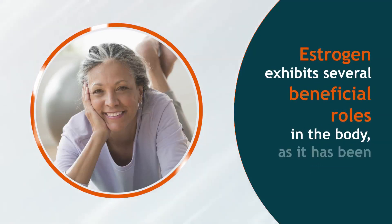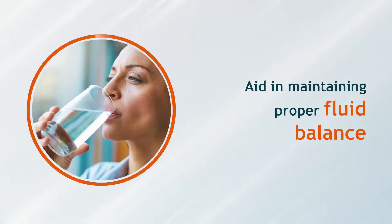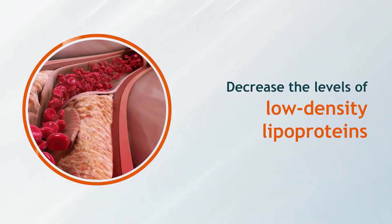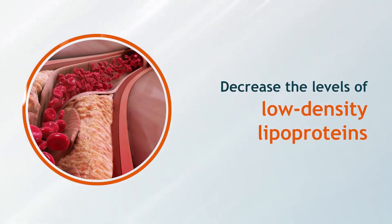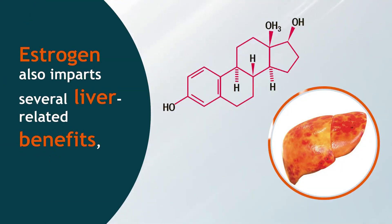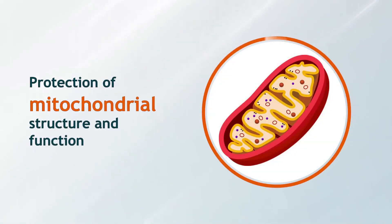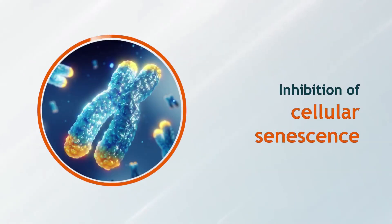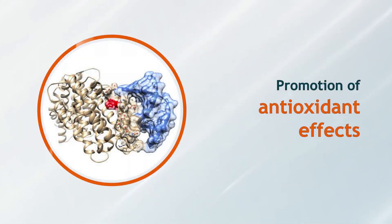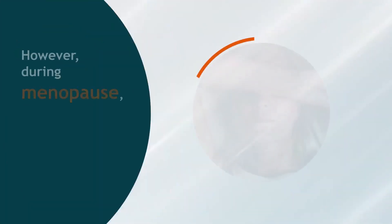Estrogen exhibits several beneficial roles in the body. It has been shown to promote coagulation, aid in maintaining proper fluid balance, increase high-density lipoproteins, and decrease the levels of low-density lipoproteins. Estrogen also impacts several liver-related benefits, such as inhibition of fibrogenesis, protection of mitochondrial structure and function, inhibition of cellular senescence, increase in innate immunity, and promotion of antioxidant effects.